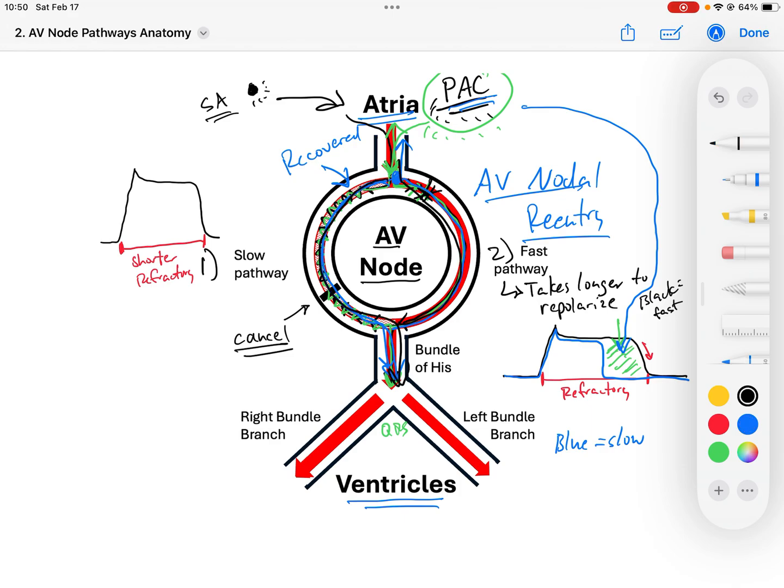And that is the AV nodal re-entry mechanism. That is called AV nodal re-entry. It's when a PAC occurs right in this exact moment. And it causes signal to go around and around. And every time it goes around and sends a signal up into the atria, down into the ventricles, up into the atria, down into the ventricles. And this mechanism is called slow-fast, right? We're going down the slow pathway and then back up the fast pathway, down the slow pathway, up the fast pathway.